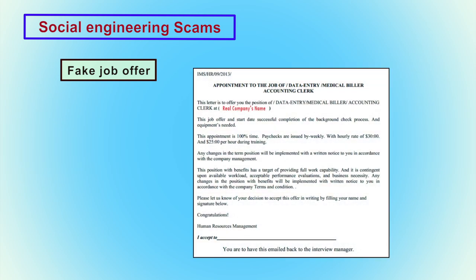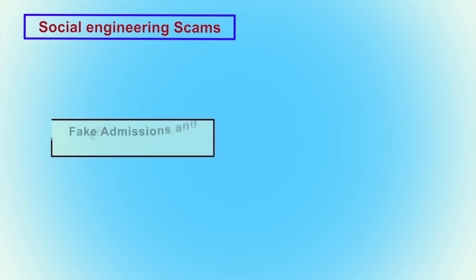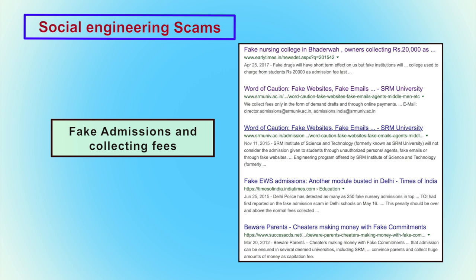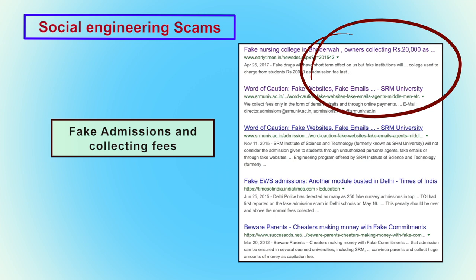In fake job offer scams, company email IDs are spoofed by scammers who send emails to users claiming they have been selected for a job they never applied for. Users should not respond to such emails. In fake admission scams, popular university websites are cloned and hosted on different servers, listing various courses, student numbers, and online payment account details. In this way, users, parents, and children become victims of these kinds of scams.